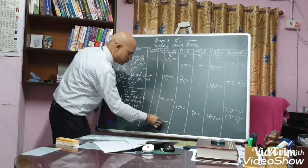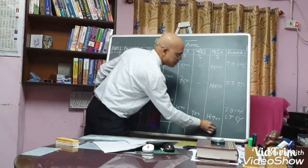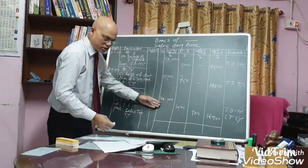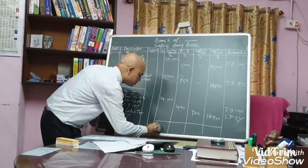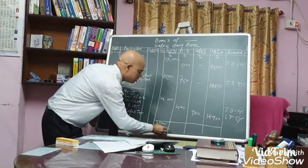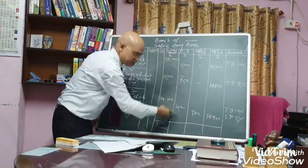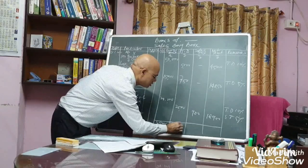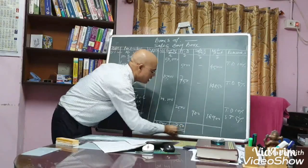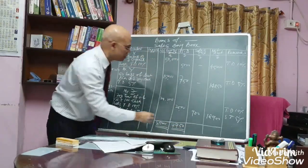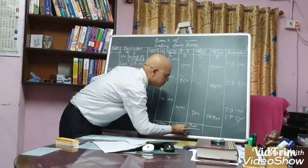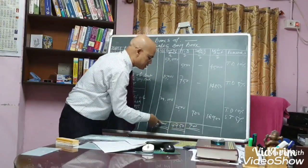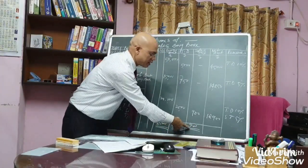Now we will add these columns. Total of gross will be 85,000. Total of discount will be 7,750, and total of sales tax will be 900. Net amount is 85,000 minus 7,750 plus 900.